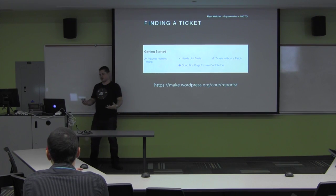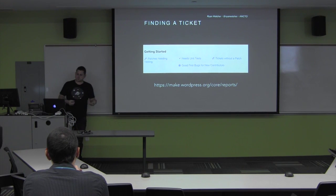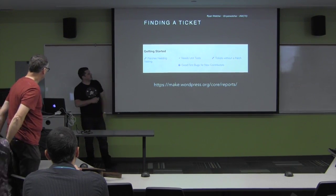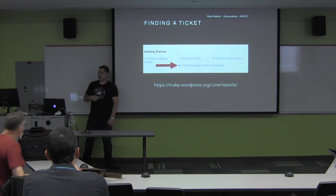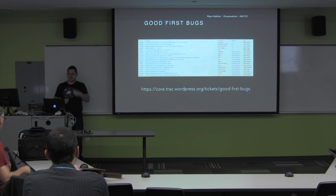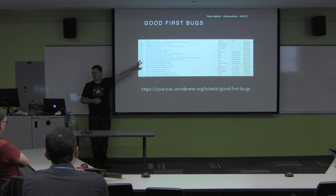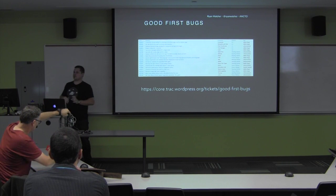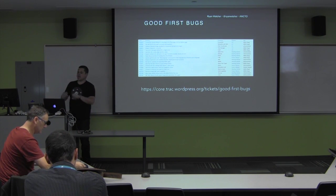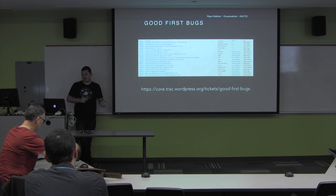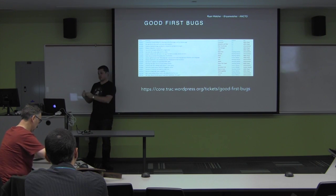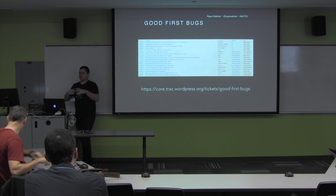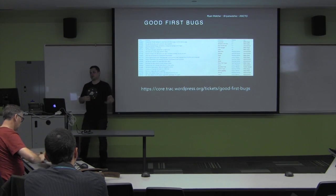Finding a ticket: when you go to make.wordpress.org/core/reports, scroll down until you see 'Getting Started' and specifically look at 'Good First Bugs for New Contributors.' When you click on it, you'll get a list of tickets that have been flagged by other developers as good starting points. These aren't necessarily easy — they're marked as 'good first bugs' because they're well-contained. You're not going to touch every single portion of WordPress to solve the problem; it might be one thing in one file. The point is to get you comfortable with the contribution process before tackling more complex problems.